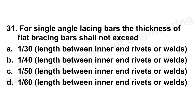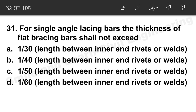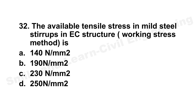Question 31: For single angle lacing bars, the thickness of flat bracing shall not exceed 1/40 of the length between inner rivets or welds. Option B is the correct answer.